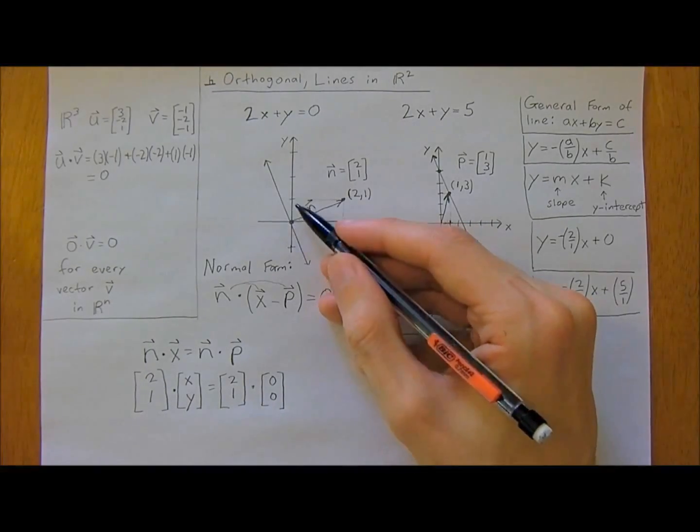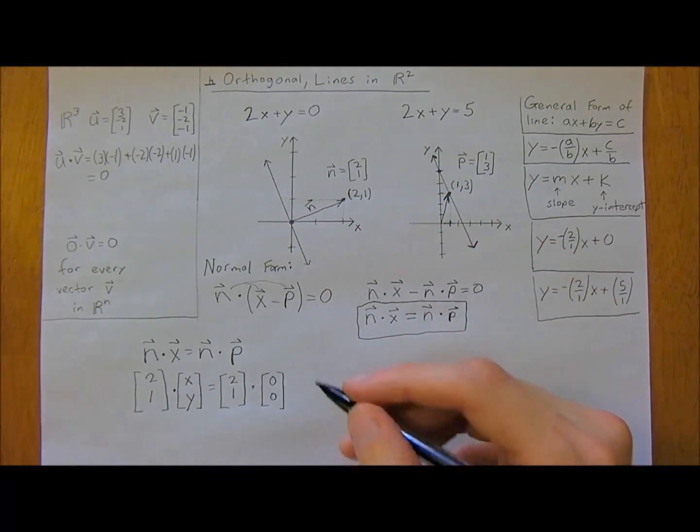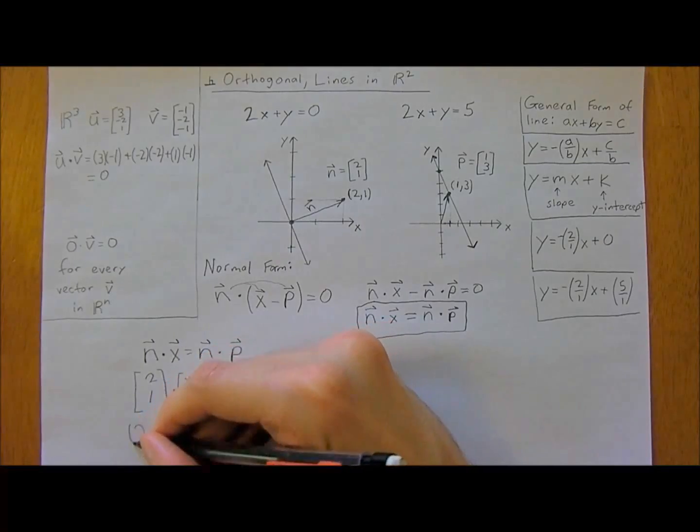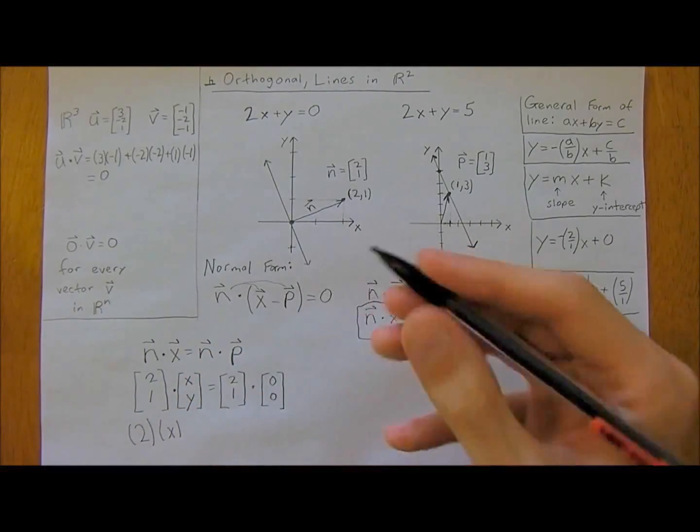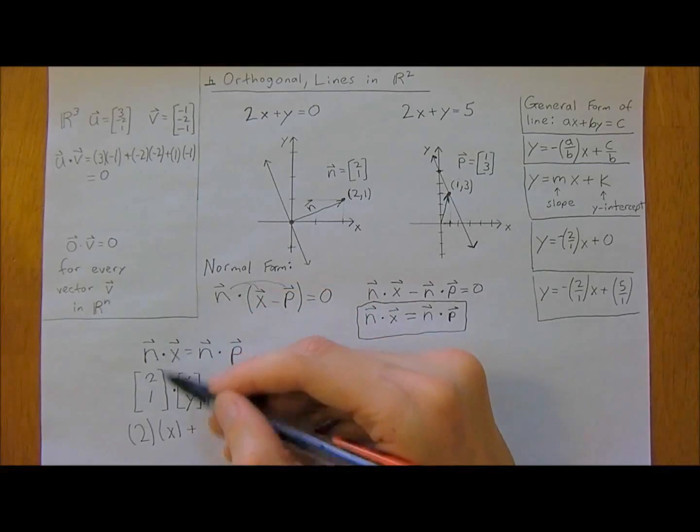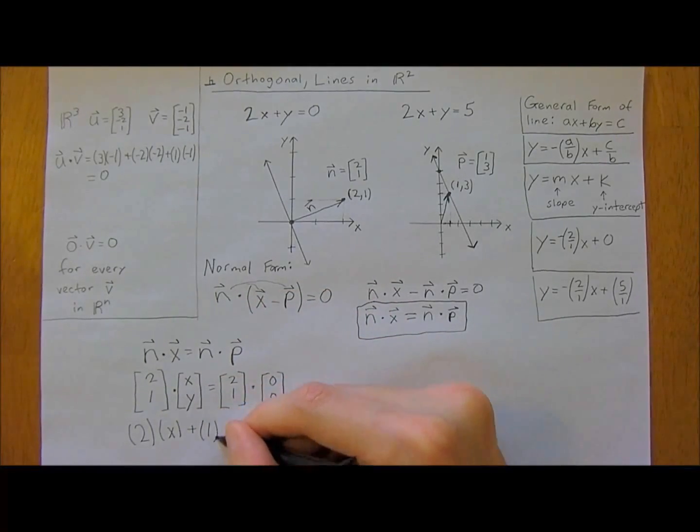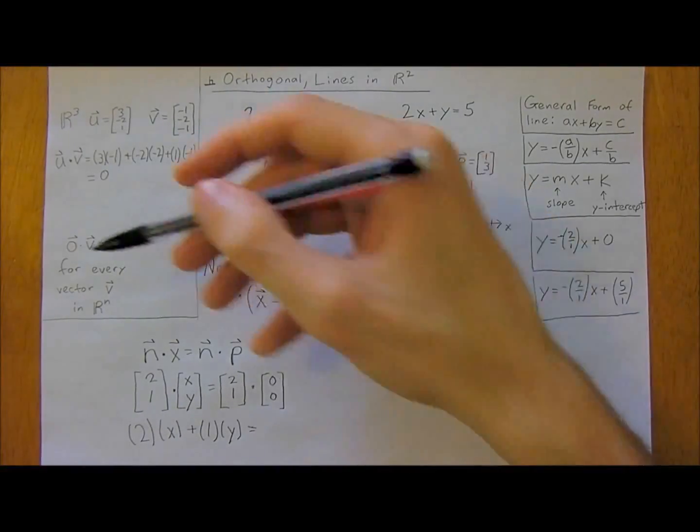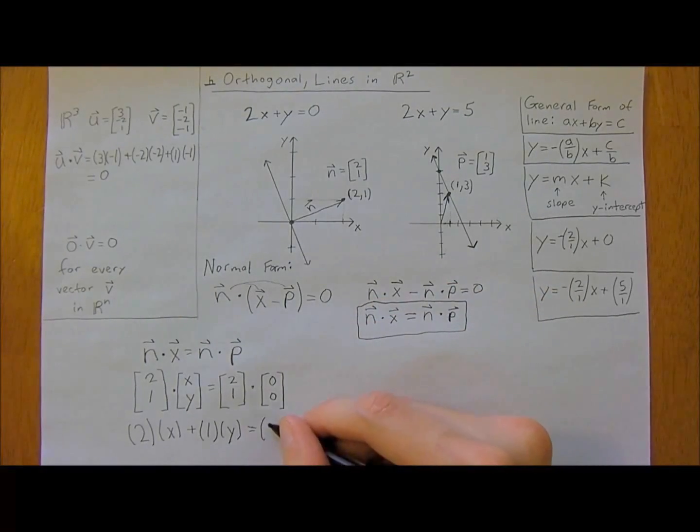We just take the dot products here and we get the x components 2 times x plus the y components, so 1 times y is equal to this dot product. Hopefully you remember zero dot any vector is just zero, but I'll write it out: 2 times 0 plus 1 times 0. This is all just zero. So this comes down to 2x plus y equals zero. That's pretty straightforward.